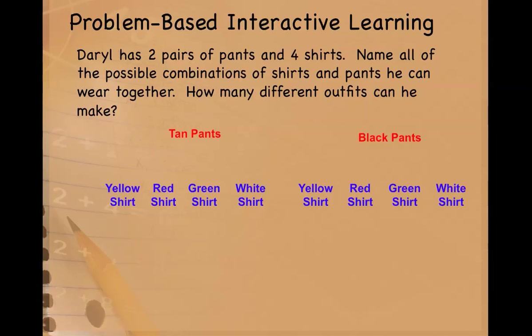Now I need to make my organized list. I'm going to create what's called a diagram tree. I start with one part of my combination and then I pair that up with one part of the other group that I have. And I draw a line. So I would be pairing up the tan pants with the yellow shirt.